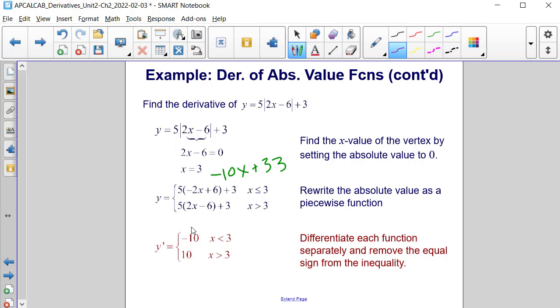And then for the bottom, it would be 10x minus 30 plus 3, that would be minus 27.